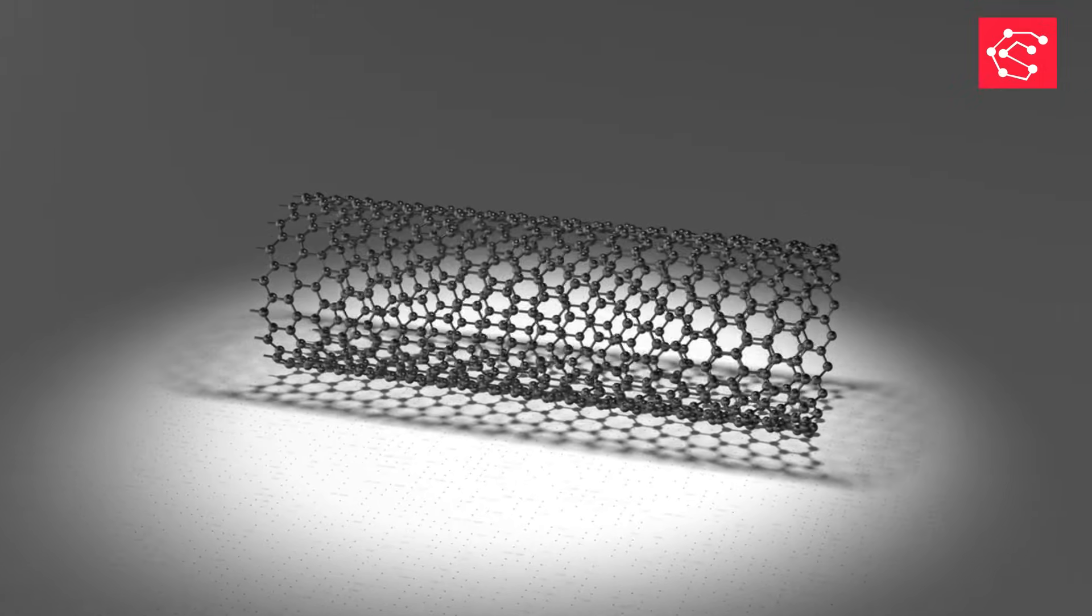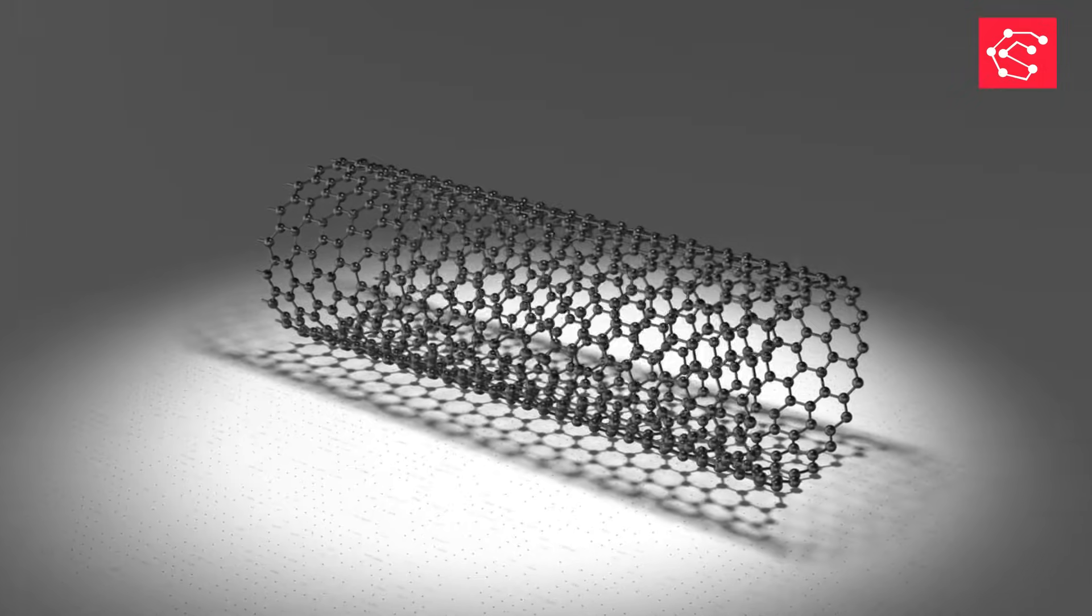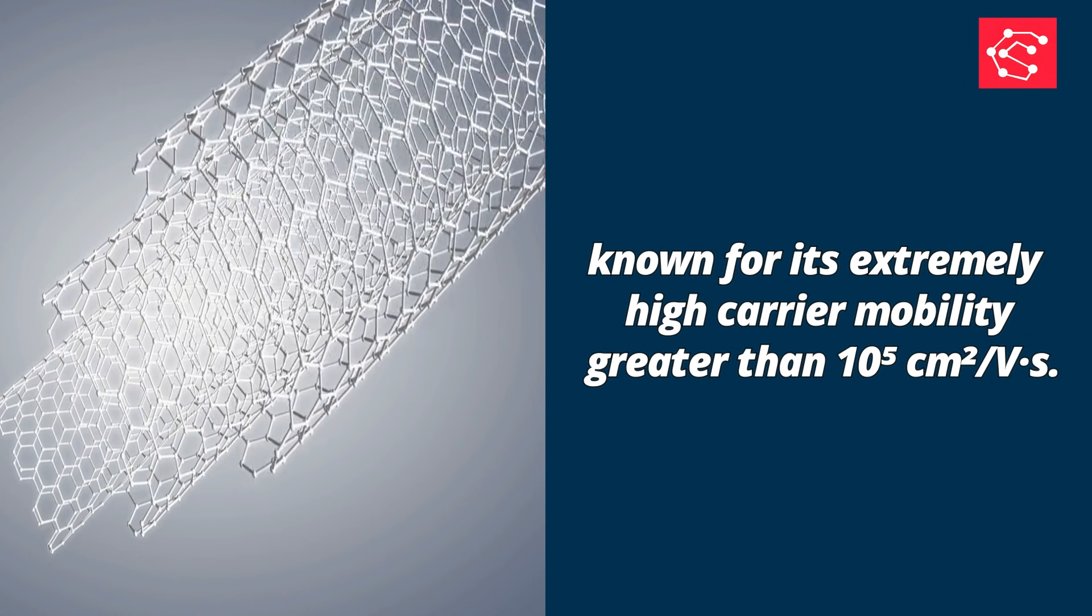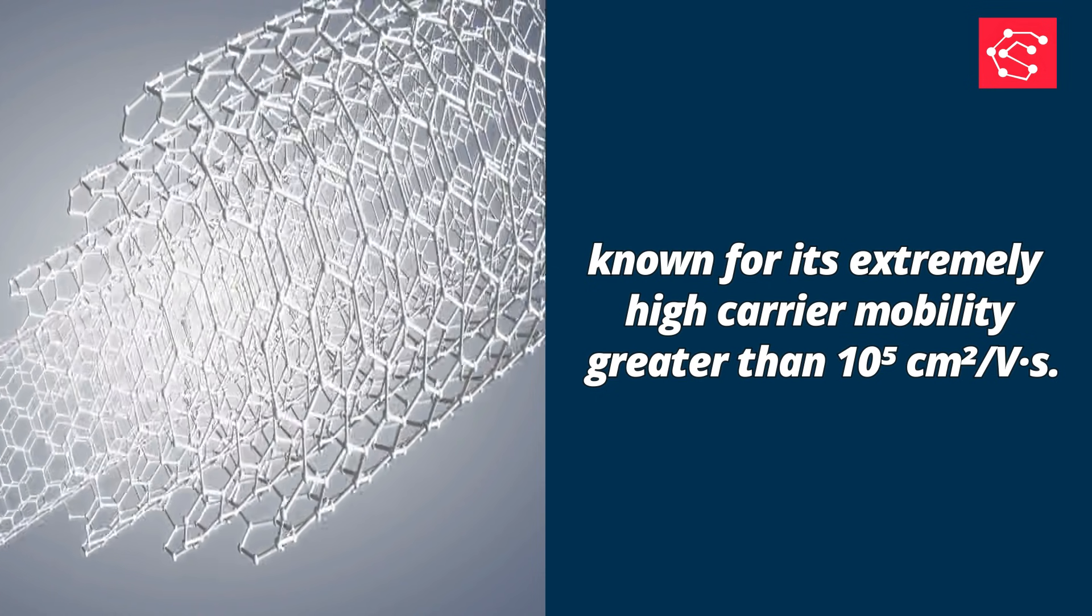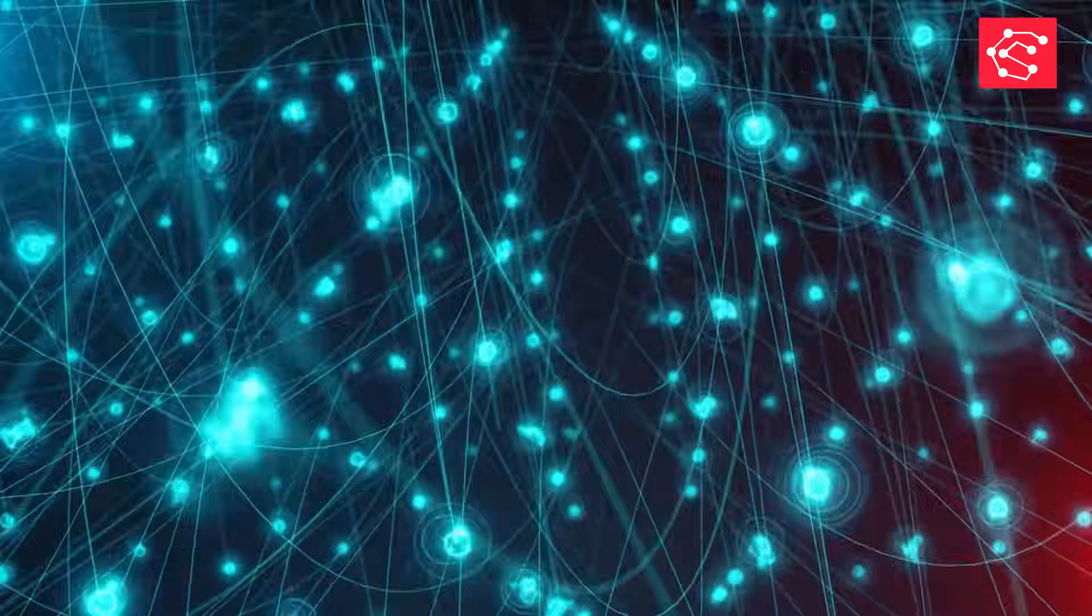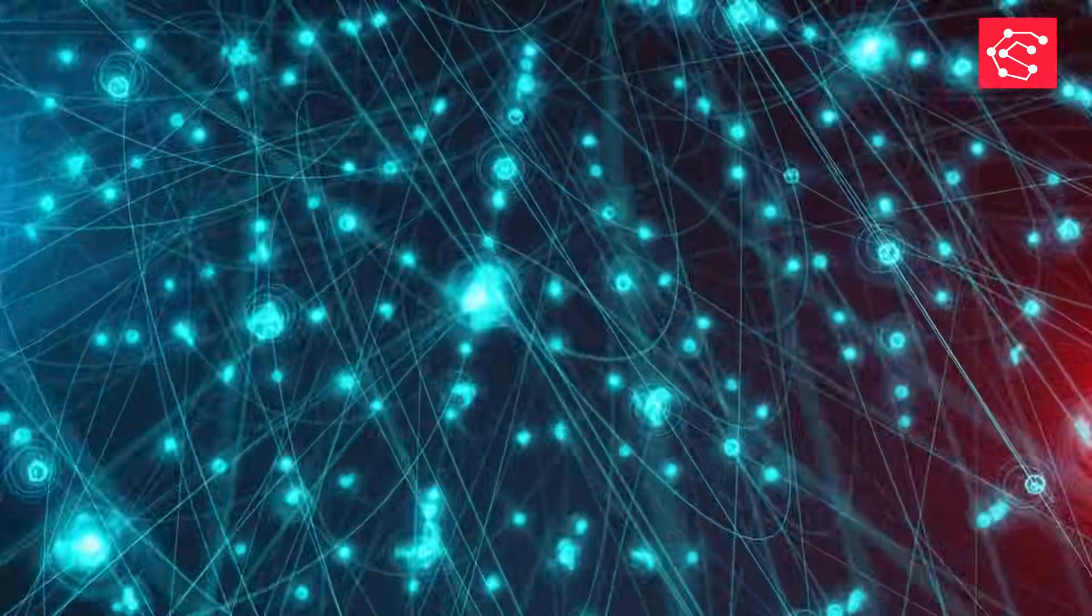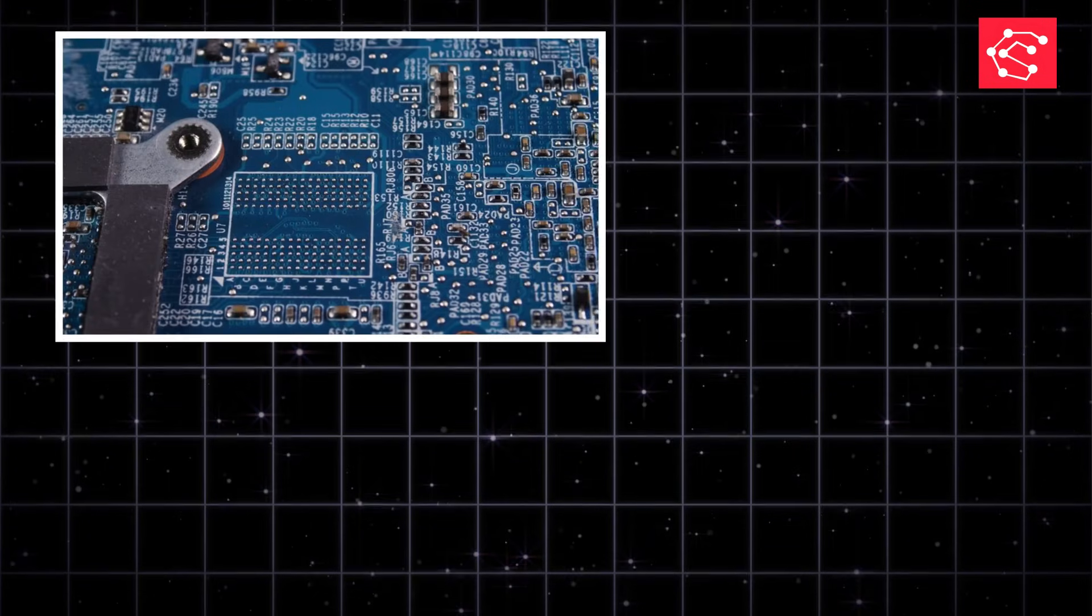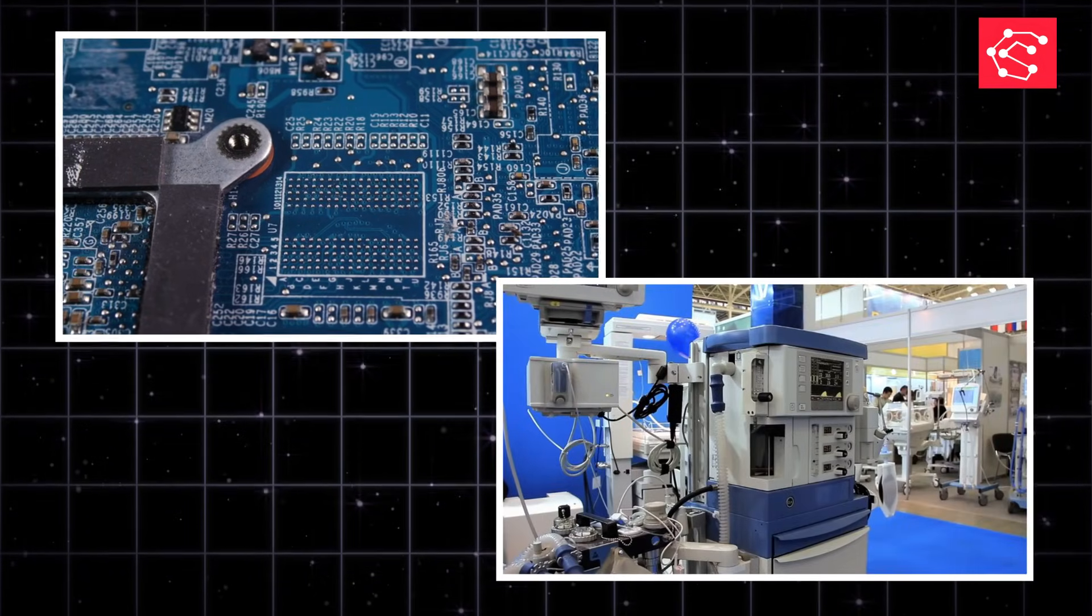One standout material is the single-wall carbon nanotube, known for its extremely high carrier mobility greater than 10 to the fifth centimeter squared per volt-second. This means electrons move through it extremely fast, making it perfect for next-generation transistors, flexible electronics, and high-performance sensors.